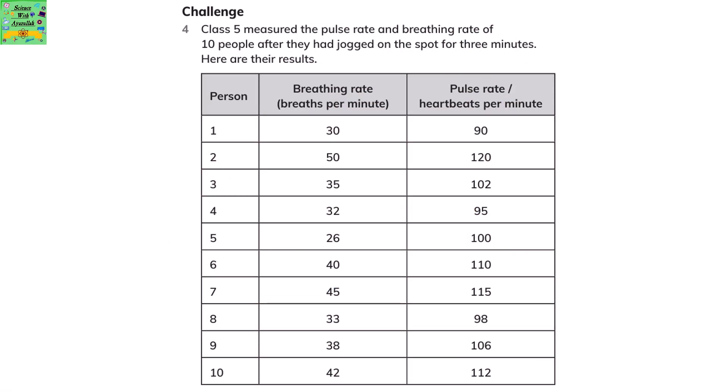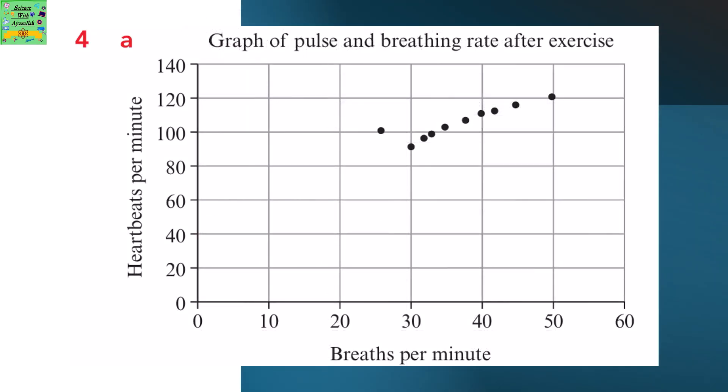Class 5 measured the pulse rate and breathing rate of 10 people after they had jogged on the spot for 3 minutes. Here are the results given in a table. The table was marked on this graph with heartbeats per minute on the y-axis and breaths per minute on the x-axis.